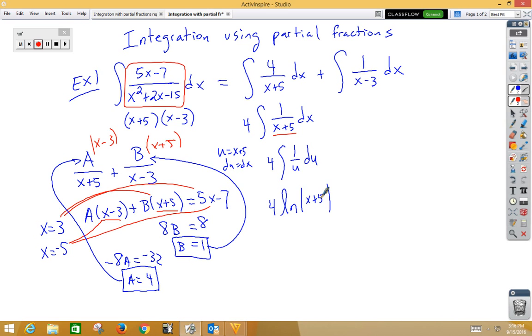In our second problem, again, we have a u sub x minus 3, du is dx. So I'm integrating 1 over u du, which would then give us plus natural log absolute value. My second u sub was x minus 3 plus C.